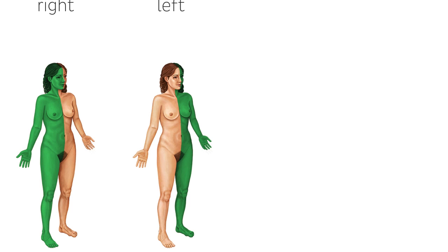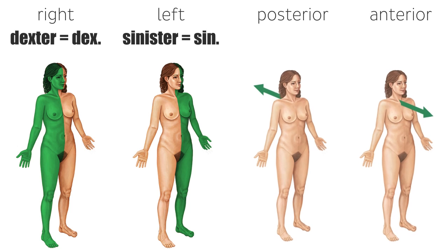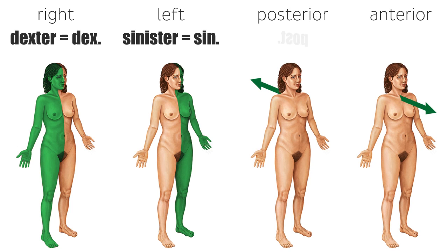When discussing whether a structure is right or left, in anatomy we use the Latin terms dexter for right, or sinister for left. The abbreviations are DEX and SIN, respectively. POST is the abbreviation for posterior, used for structures found towards your back, and the abbreviation for anterior is ANT, for structures found towards the front of your body.